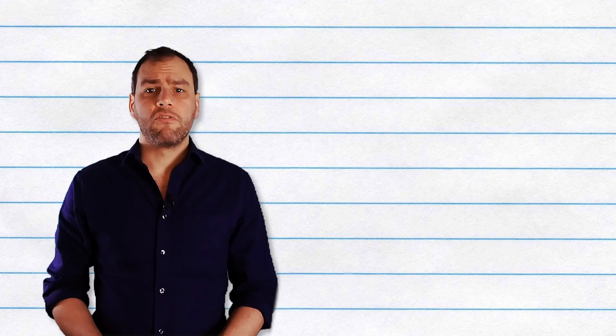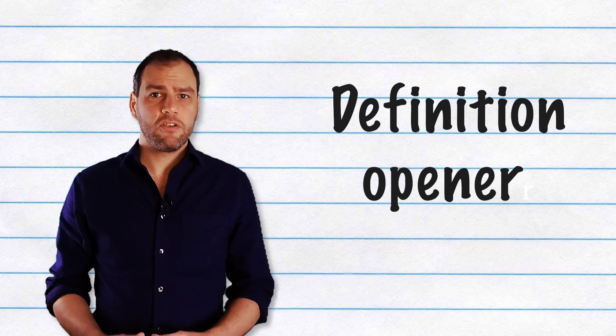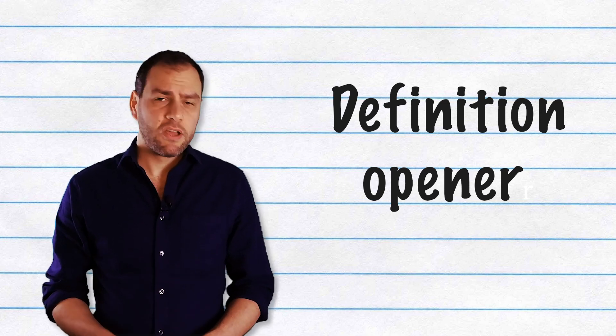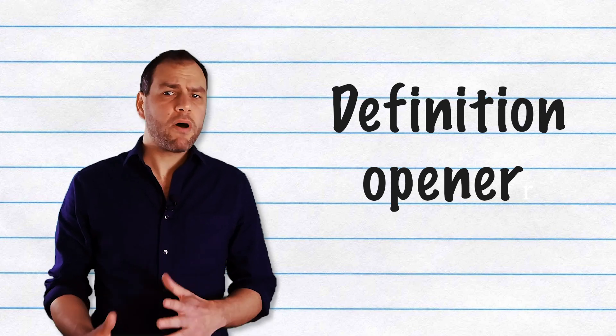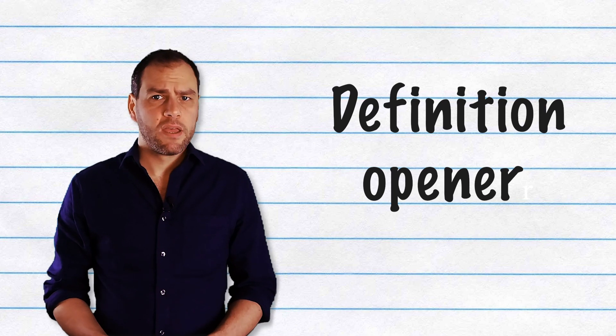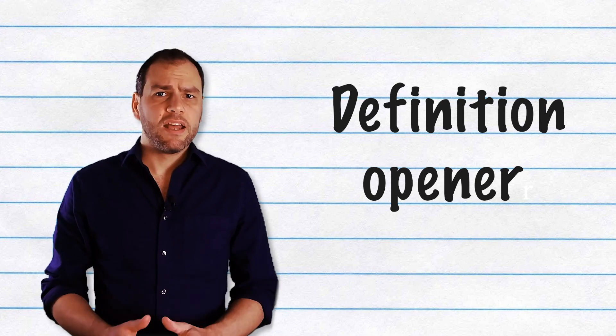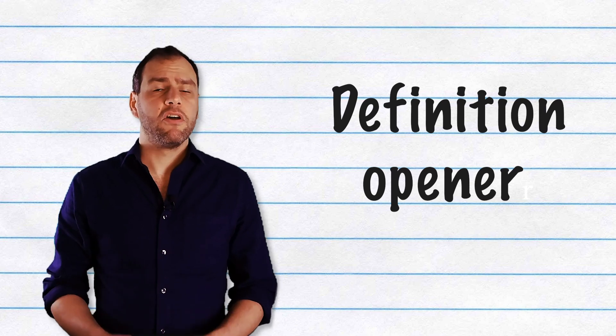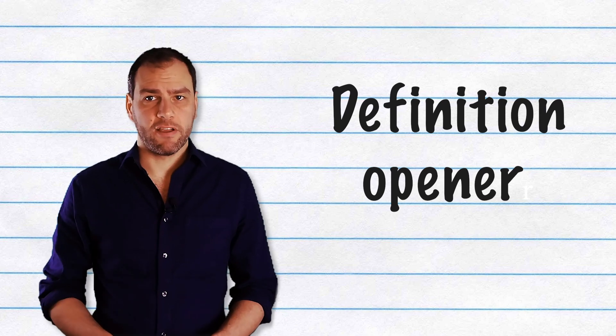You could also try starting with a definition opener. Definitions can be a really useful way of starting an essay, especially if you're writing about something controversial or that might not be commonly known about. You should be careful though. A dictionary definition doesn't normally work well for this. Instead, you should use a definition from an academic source that defines the terms in the way that you're going to use it in your essay.